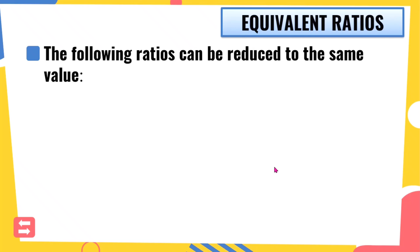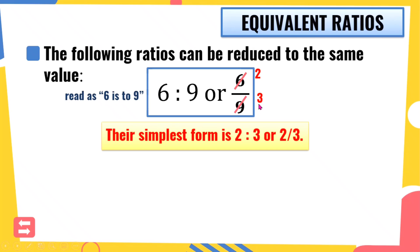So the following ratios can be reduced to the same value. We have 6 is to 9 or 6 over 9. So pwedeng colon form, pwedeng fractional form, yung pag-sulat natin ng ating ratio. At itong ratio na ito ay pwede natin ma-reduce or ma-lowest term, katulad ng ginagawa natin sa fraction. Iisip tayo ng number na pwedeng i-divide sa kanila pareho. Pwede natin silang i-divide pareho sa 3. 6 divided by 3 is 2, and 9 divided by 3 is 3.